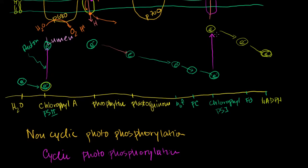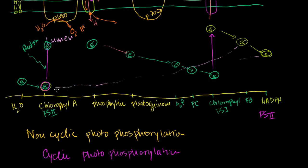What happens in cyclic photophosphorylation is: this electron, after it gets excited in photosystem I, ends up — instead of at NADPH — it ends up at photosystem II. So instead of this having to be replaced by electrons from water, in cyclic photophosphorylation it ends up getting replaced by the original electrons.